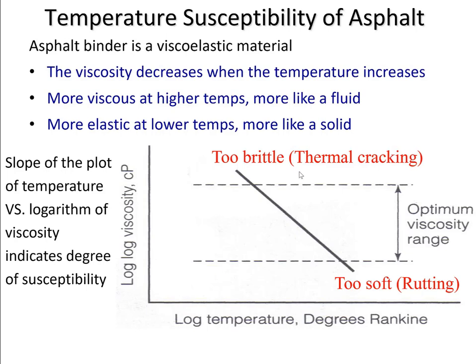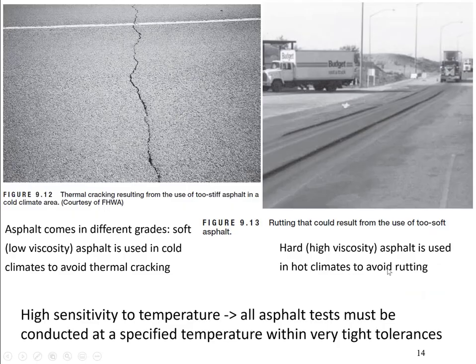On the other hand, if the viscosity is below the optimum range, the mixture will be more likely to flow, leading to permanent deformation, which is called rutting. Asphalt comes in different grades, and soft asphalt should be used in cold climates to avoid thermal cracking. This figure shows thermal cracking resulting from the use of too stiff asphalt in a cold climate area.